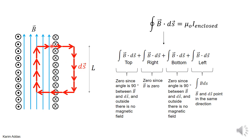Let's look at each part. The top: the magnetic field and ds vectors are perpendicular, so B dot ds is zero. Over here there's no magnetic field, so you get zero. For the right side there's no magnetic field, so you get zero. For the bottom side here there's no magnetic field, so you get zero. And here the angle is 90 degrees between B and ds, so you get zero. So the only part that will give you a contribution is this line on the left side.